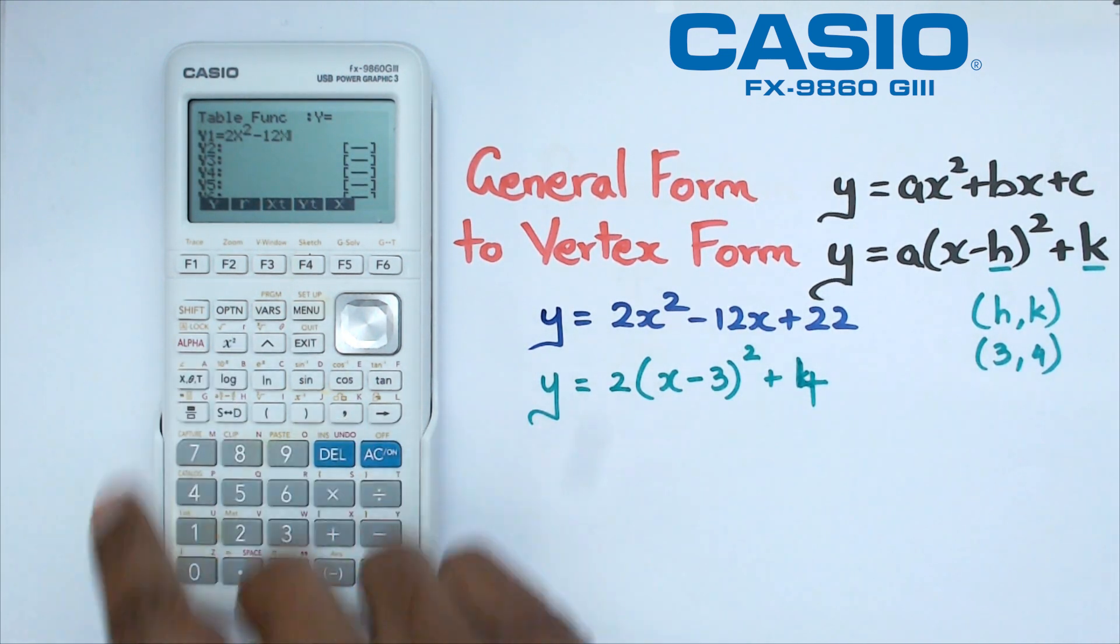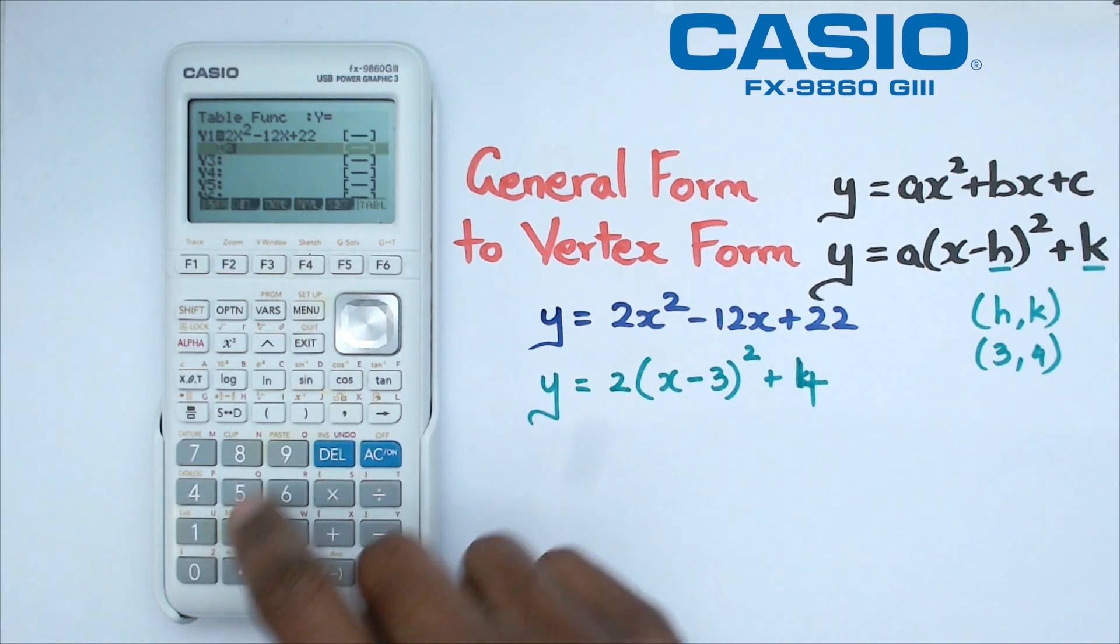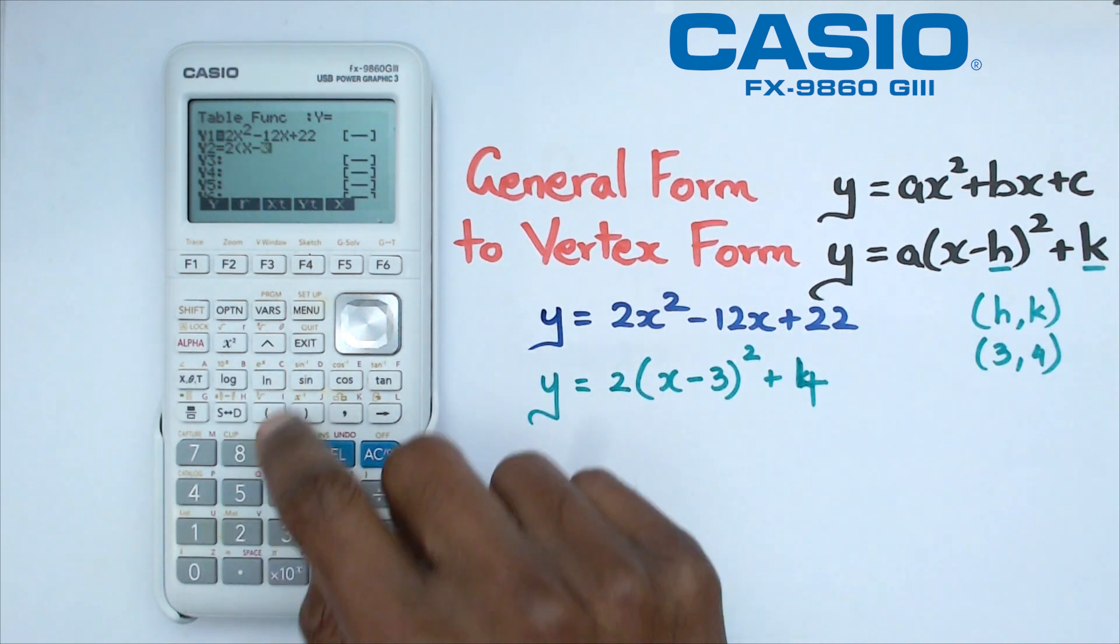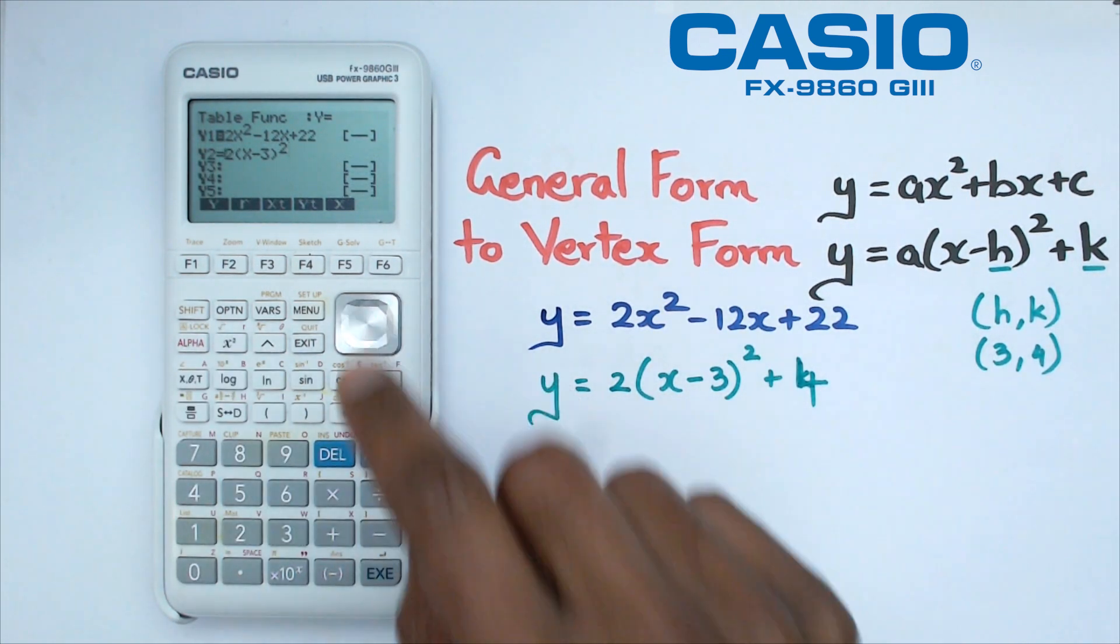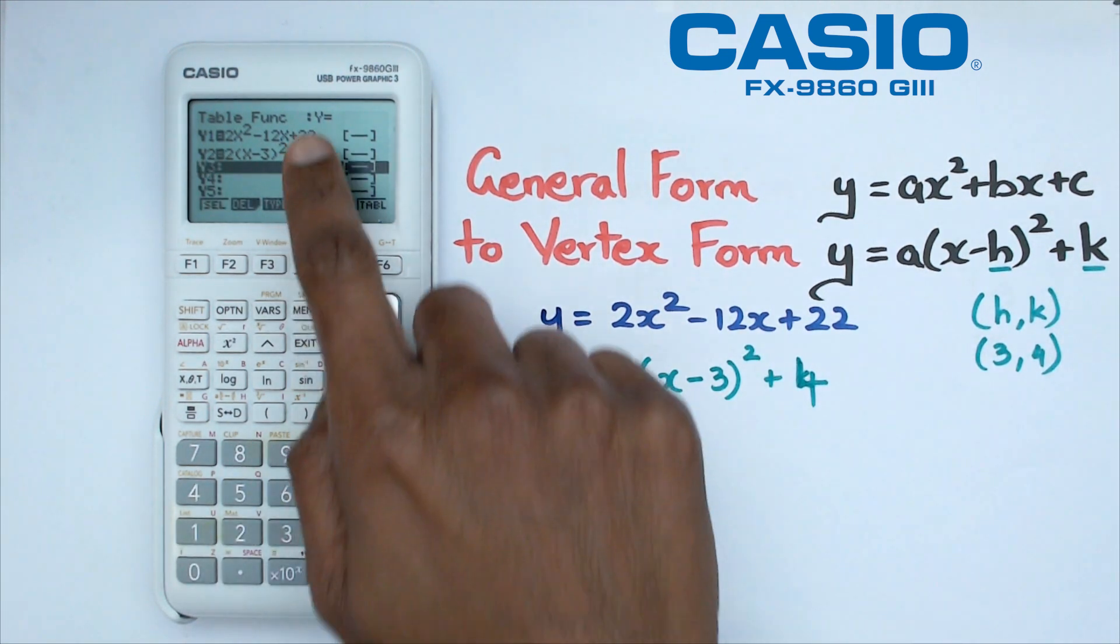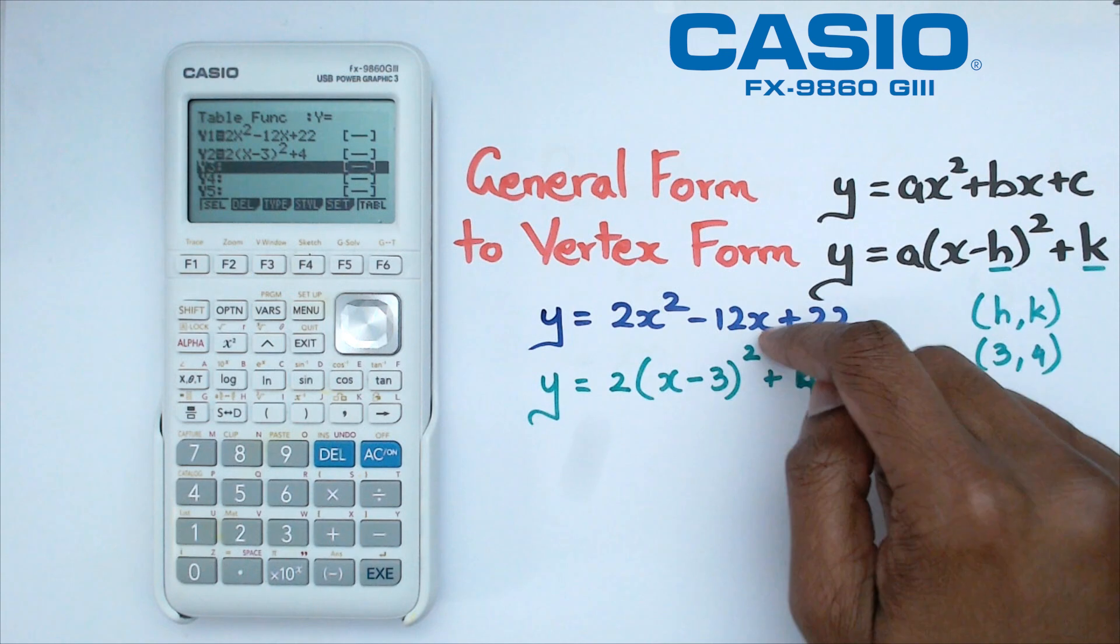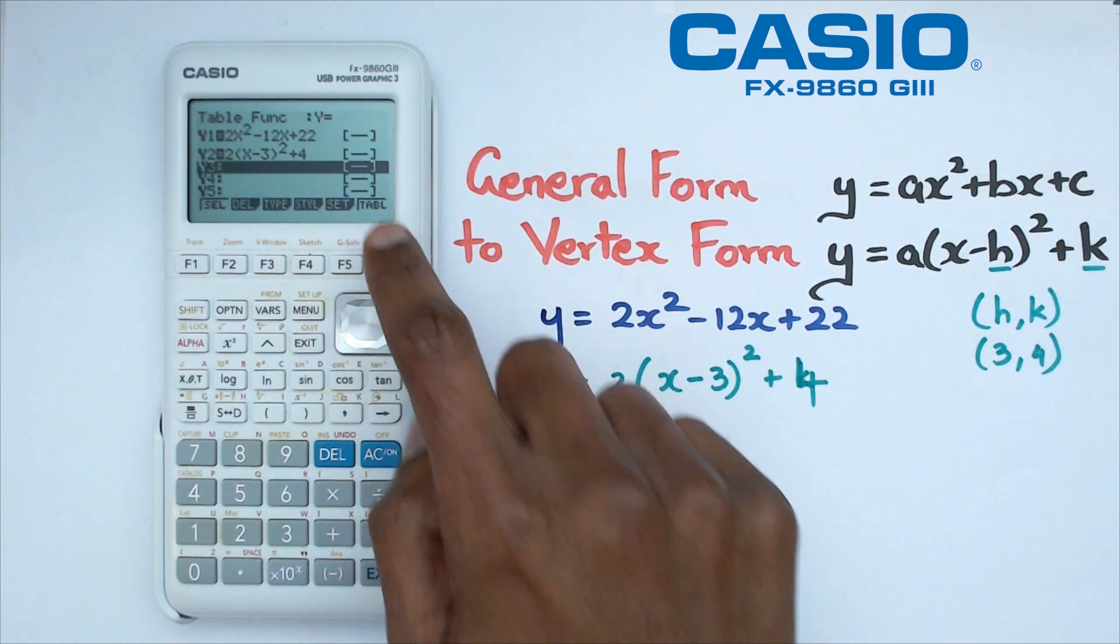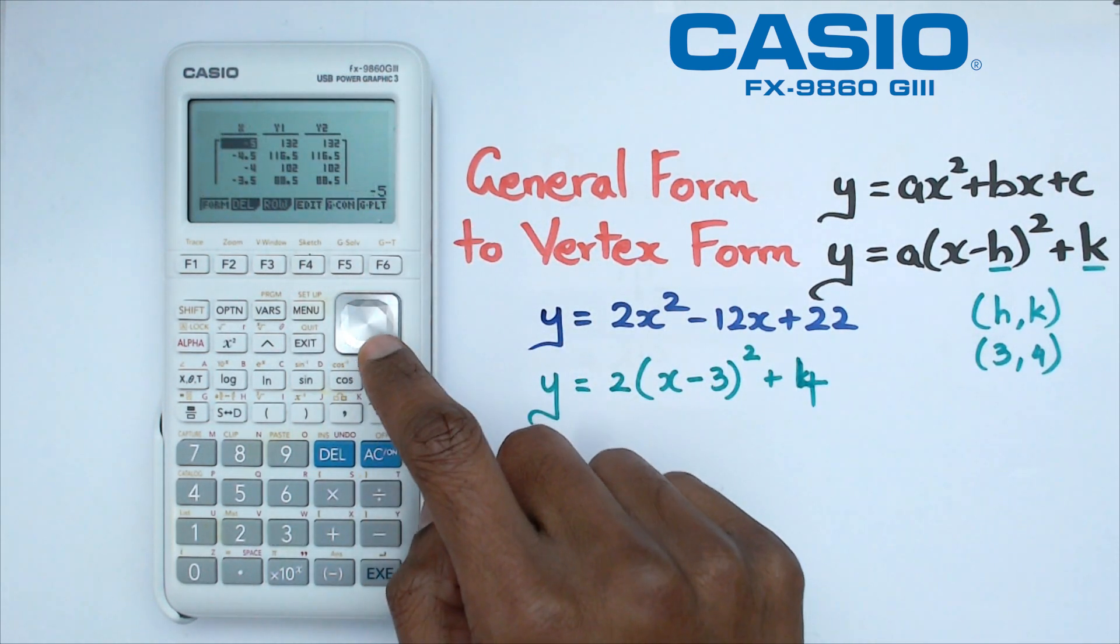So we've got 2x squared minus 12x plus 22, and in the next line we're gonna have 2x minus 3 squared and plus 4. So what we've done is we've actually put both of these equations in tables and we're gonna click on table.